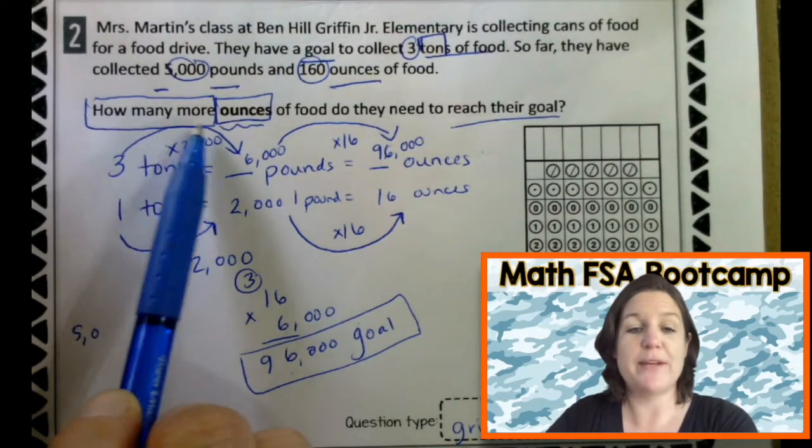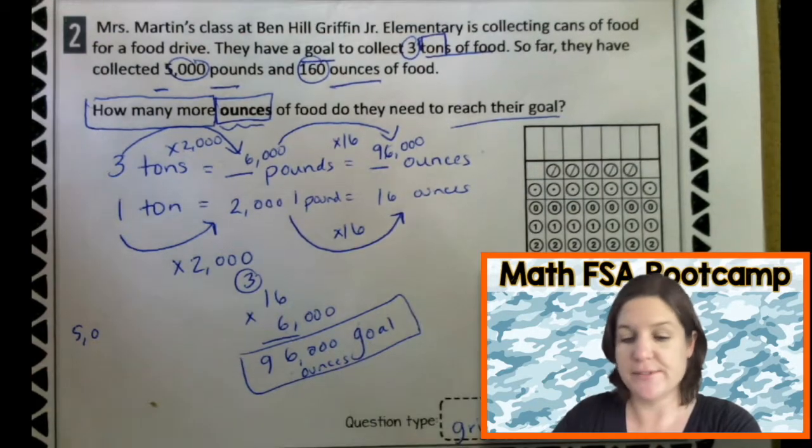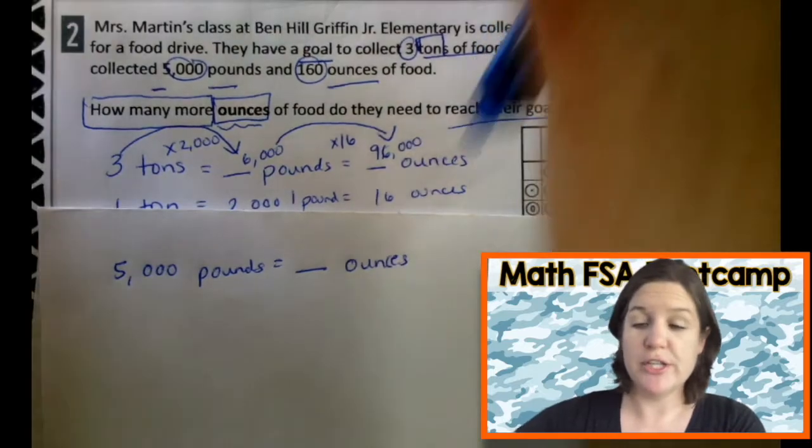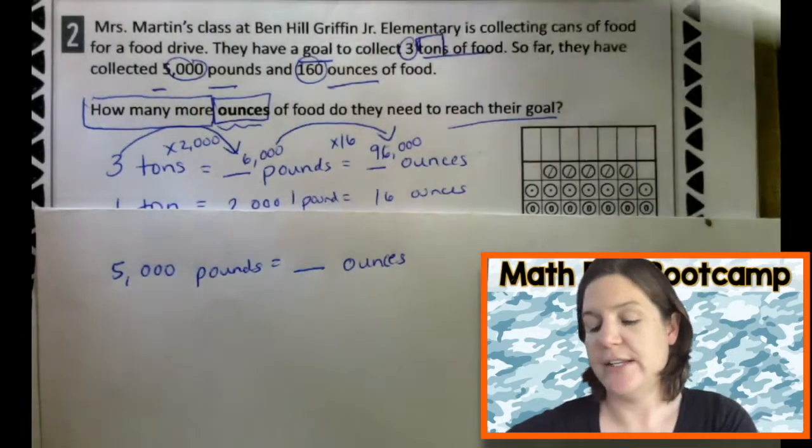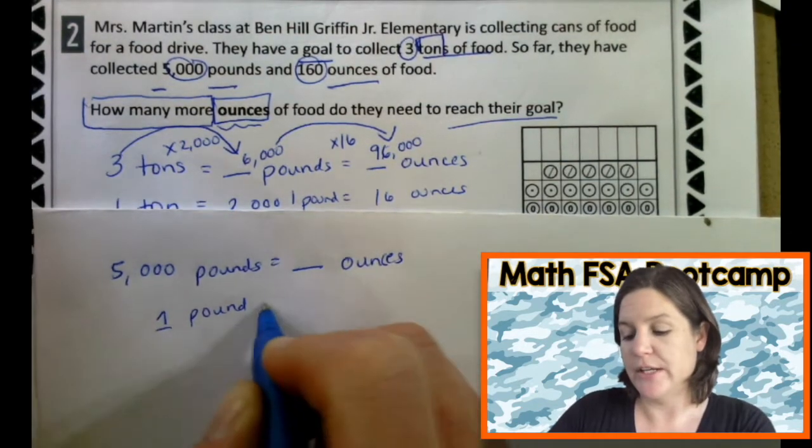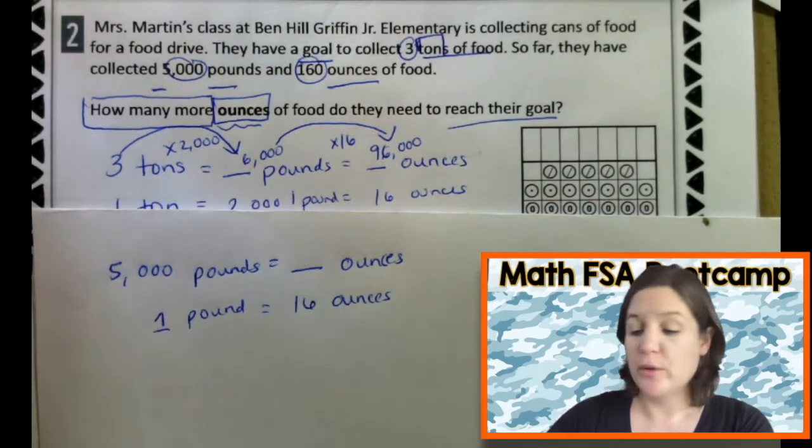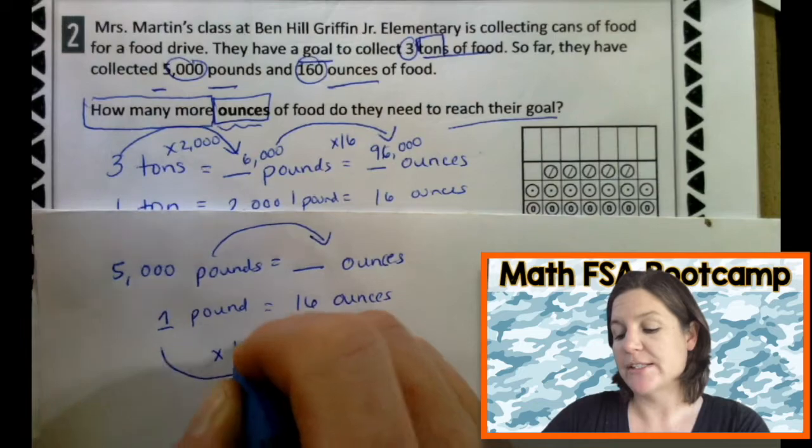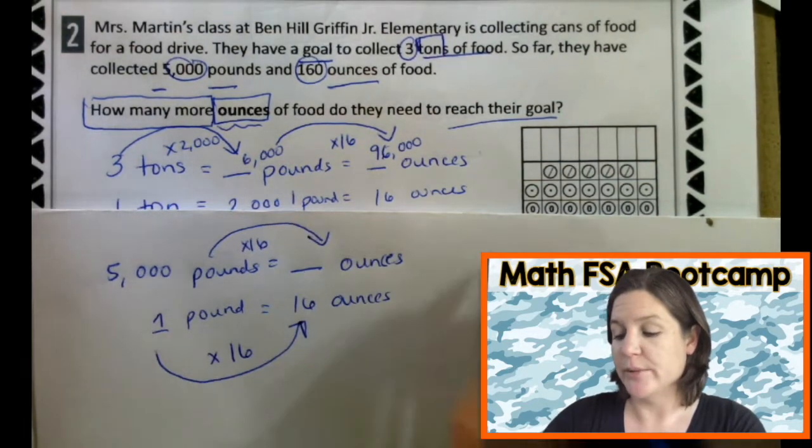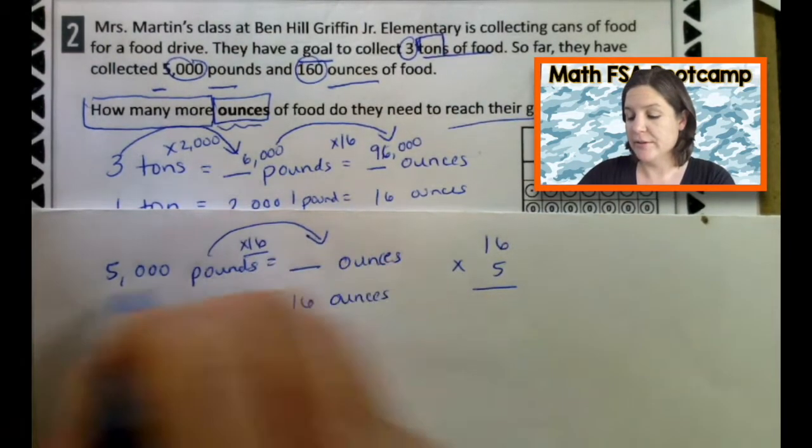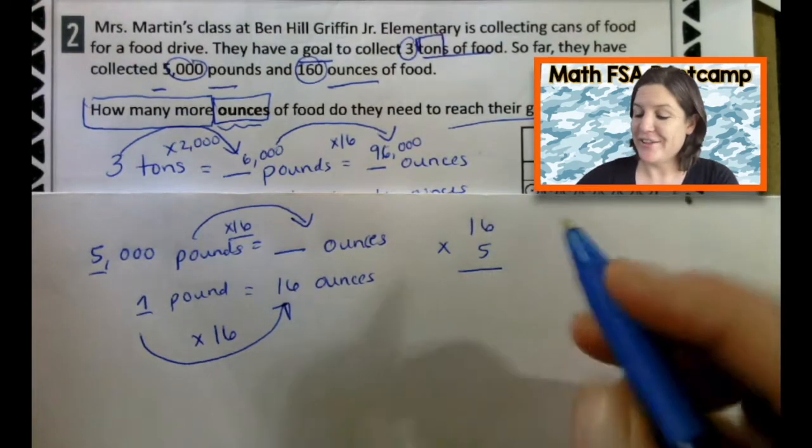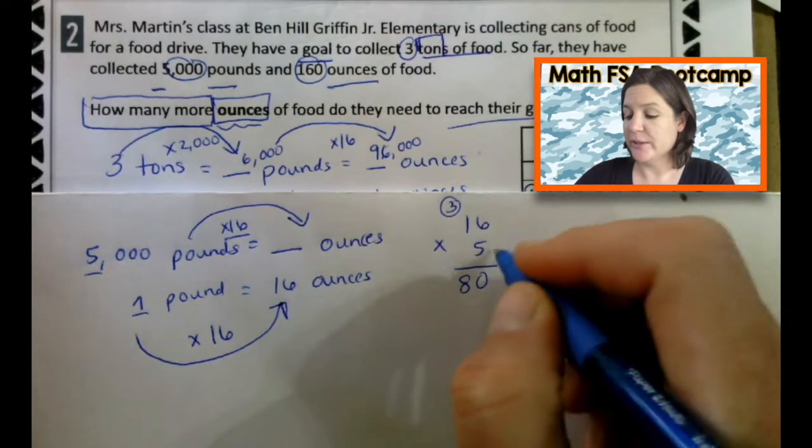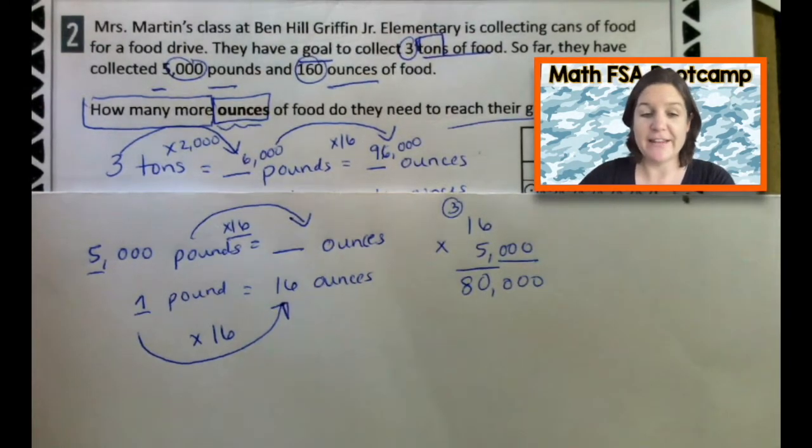Why into ounces? Because it says how many more ounces. So, we know the goal was 96,000 ounces. Now, we're trying to figure out what they currently have. 5,000 pounds equals how many ounces? Well, again, if you look at the reference sheet, 1 pound equals 16 ounces. So, let's jot that down. Match them up. Here's my pound side. 1 pound equals 16. We know that we are converting from pounds into ounces. When we look at the numbers, 1 to 16, we're going up. So, we're multiplying by 16. Same on the bottom. Same on the top. So, I'm going to take 16 times 5 and then I'll add those zeros at the end. 6 times 5 is 30. 5 times 1 is 5 plus 3 is 8. And really, it was 5,000. So, let's do 1, 2, 3. 80,000.